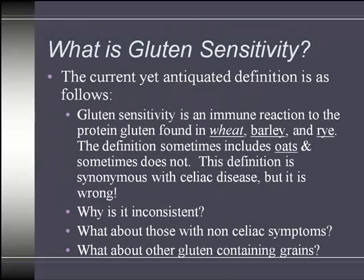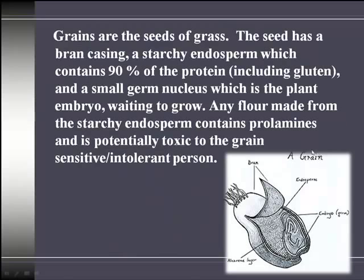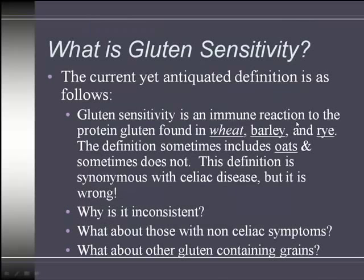This is a very important concept, because the definition being promoted for gluten sensitivity states it is an immune reaction to the protein gluten found in wheat, barley, and rye — but makes no mention of corn, spelt, millet, amaranth, or other grains. Even oats, which are classically considered part of this definition, are sometimes labeled "gluten free." But oats are a grain; grains contain an endosperm; and in that endosperm you have prolamines, which are glutens. So it is impossible for oats to be gluten free.